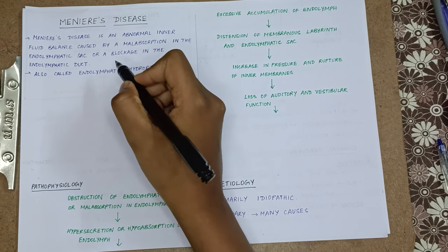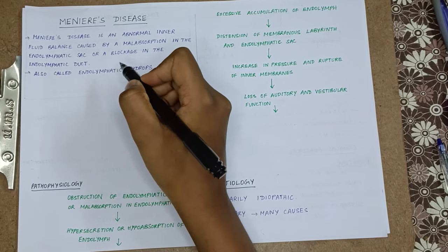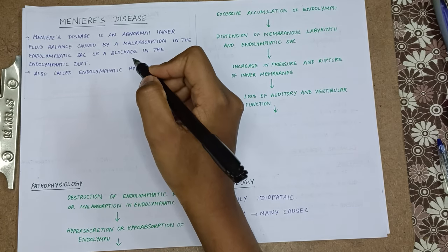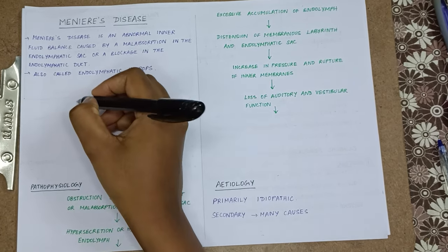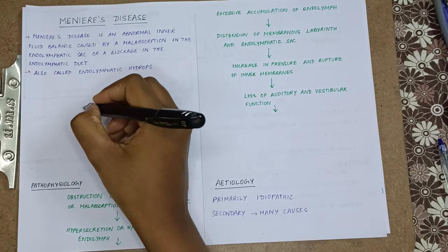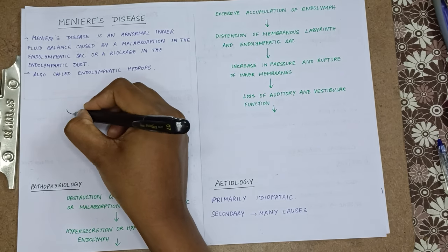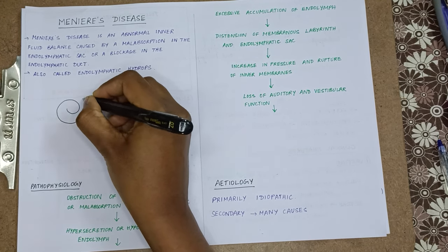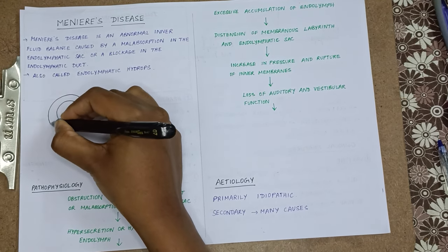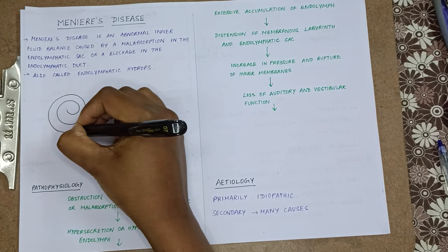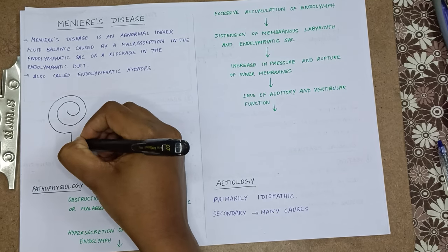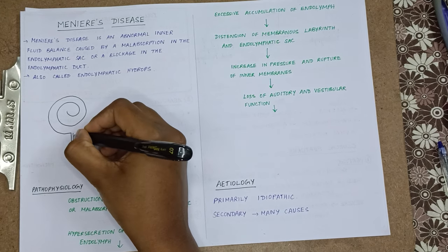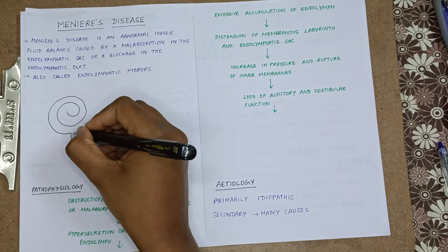Now to understand the endolymphatic sac, endolymphatic duct, and all about the fluids, we will be discussing about the anatomy of the inner ear. Now I will draw the anatomy. This is the cochlea and cochlear aqueduct, which is going to carry the perilymph from the CSF.